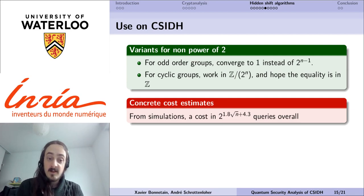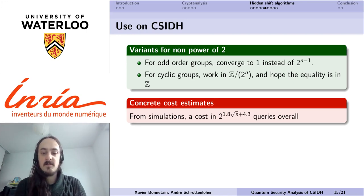We've simulated this latter approach, and from simulations, heuristically, we obtain a concrete cost of 2 to the 1.8 square root of n plus 4.3, which roughly matches the asymptotic estimates with a small constant as the polynomial overhead.